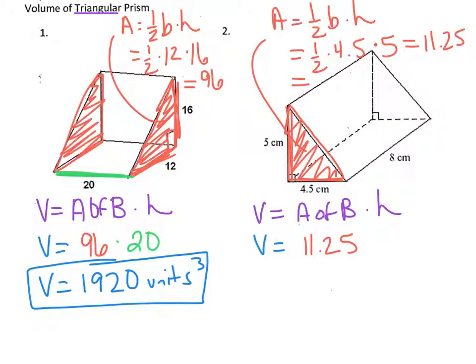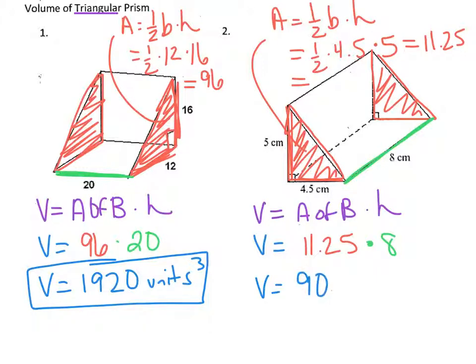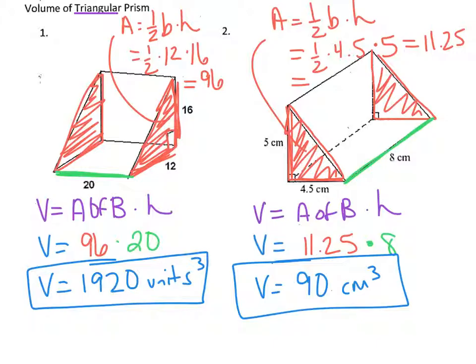The next thing we have to find is the height. In this figure, the picture is not sitting on its base, so you have to picture: if we were to pick this figure up, turn it over, and set it on one of the triangles, how tall would the figure be? Look at the two bases and how far apart they are. The two triangles are 8 centimeters apart, so the height is 8. Now, 11.25 times 8 gives us 90 cubic centimeters. That triangular prism could hold 90 cubic centimeters. Those are some examples of how to find volume of a prism.